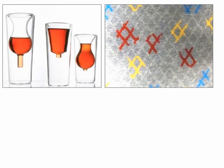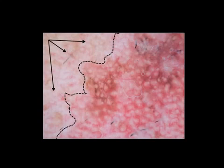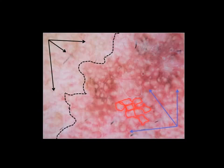In some cases it's possible to observe both signs. In this case, for example, the vessels are very different outside and inside the lesion, but the vessels inside are not only more dense — they have a lozenge shape and form red rhomboidal structures.